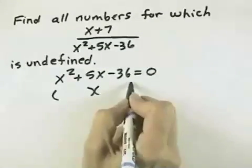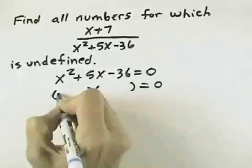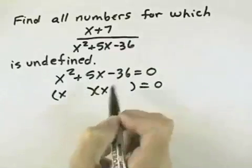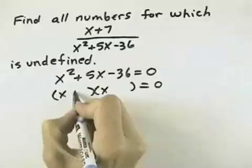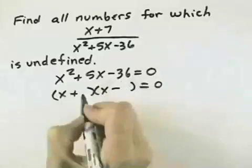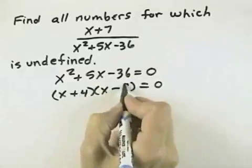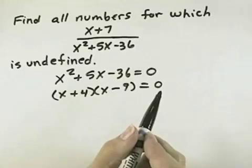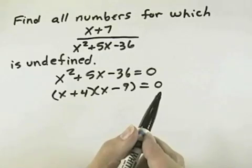It looks like this might factor, so we can set up our two factors for a trinomial. The first terms must be x. To get negative 36, we're going to have a plus and a minus. 36, one possibility is 4 times 9. If that doesn't work, we can try 6 times 6, 12 times 3, 36 times 1, or any of those other combinations.